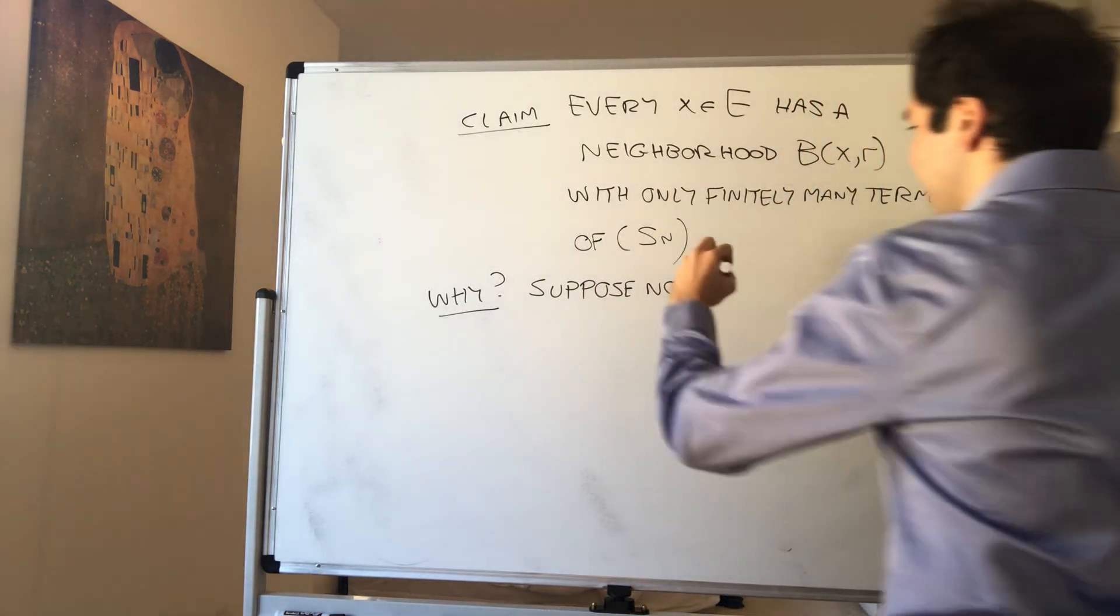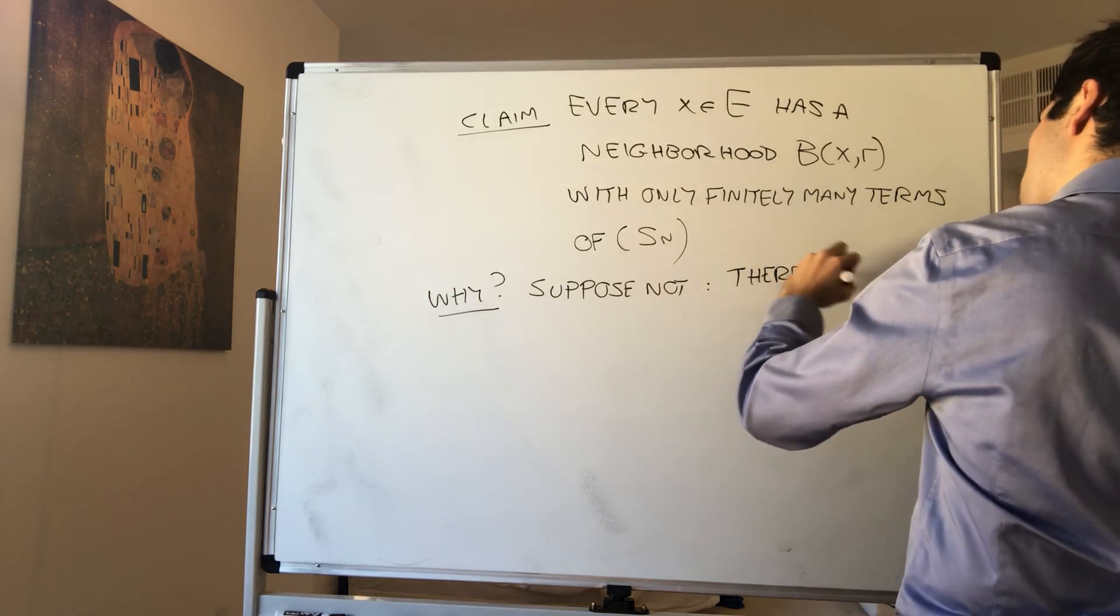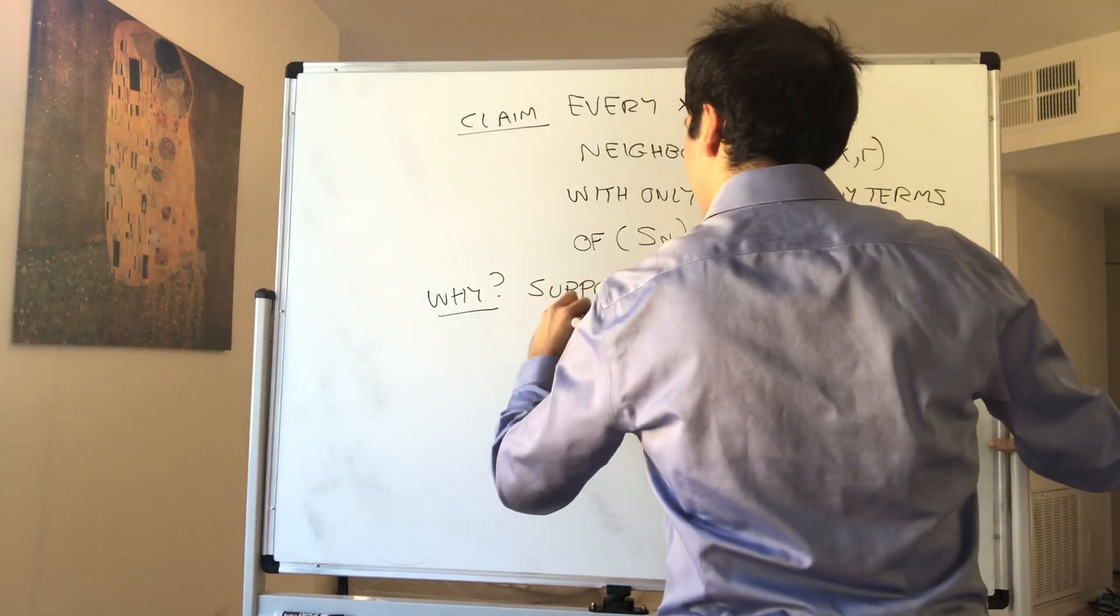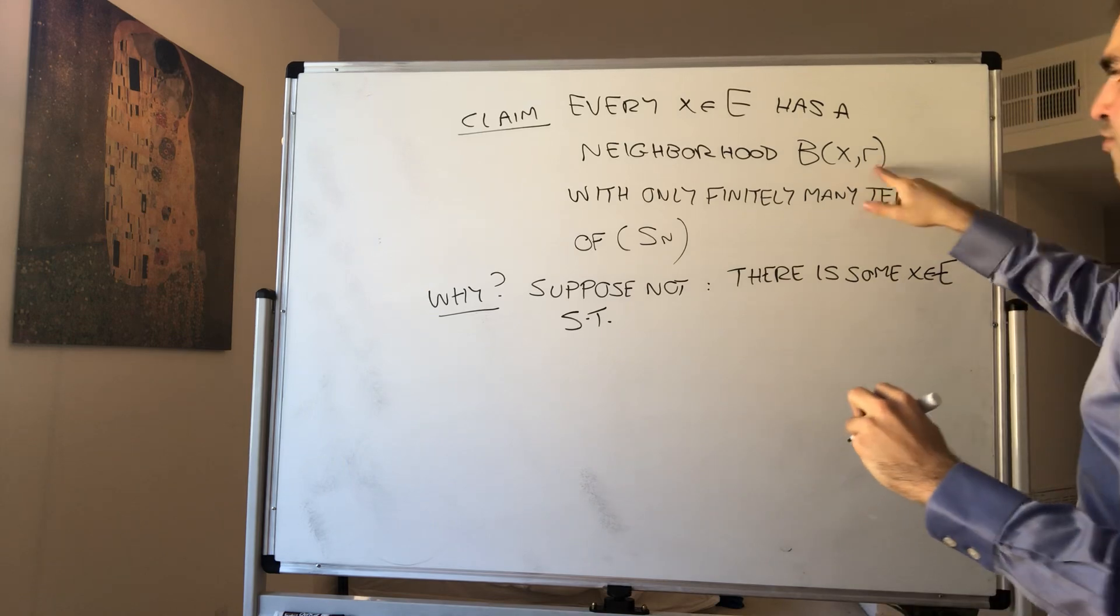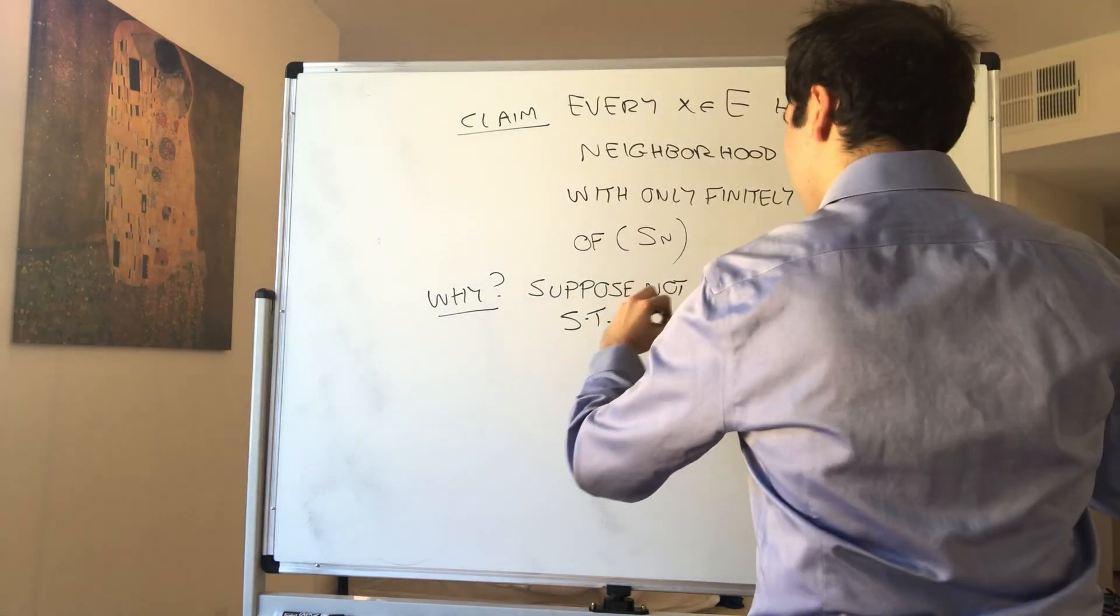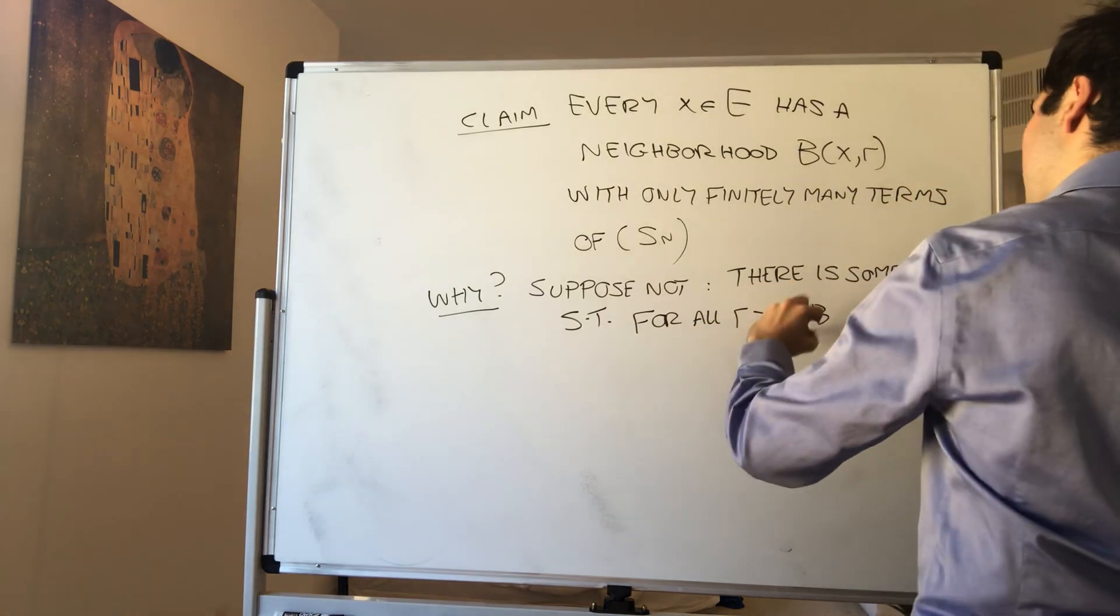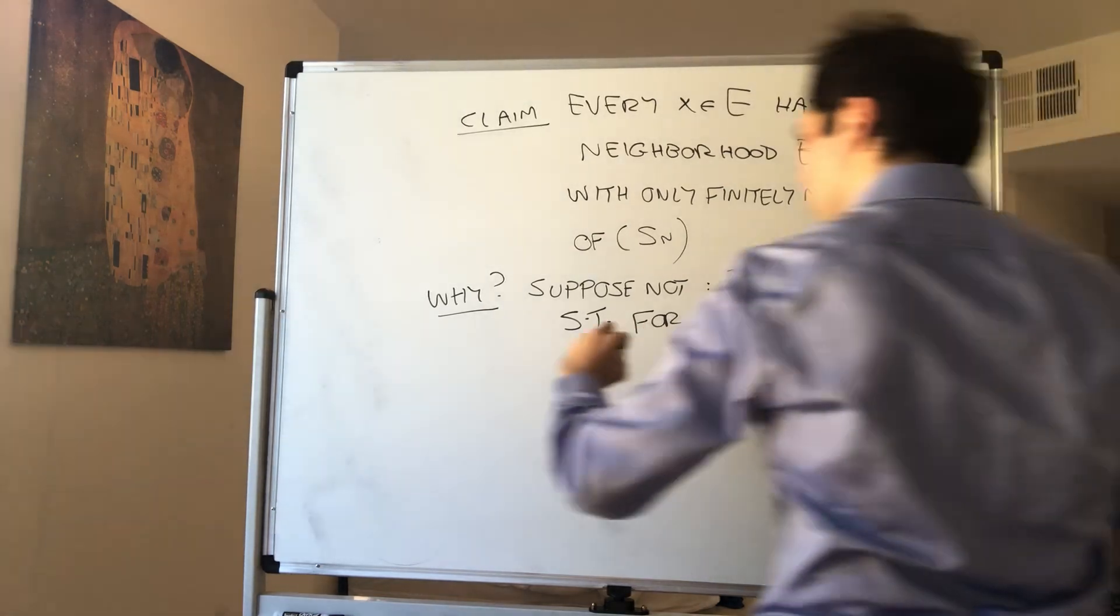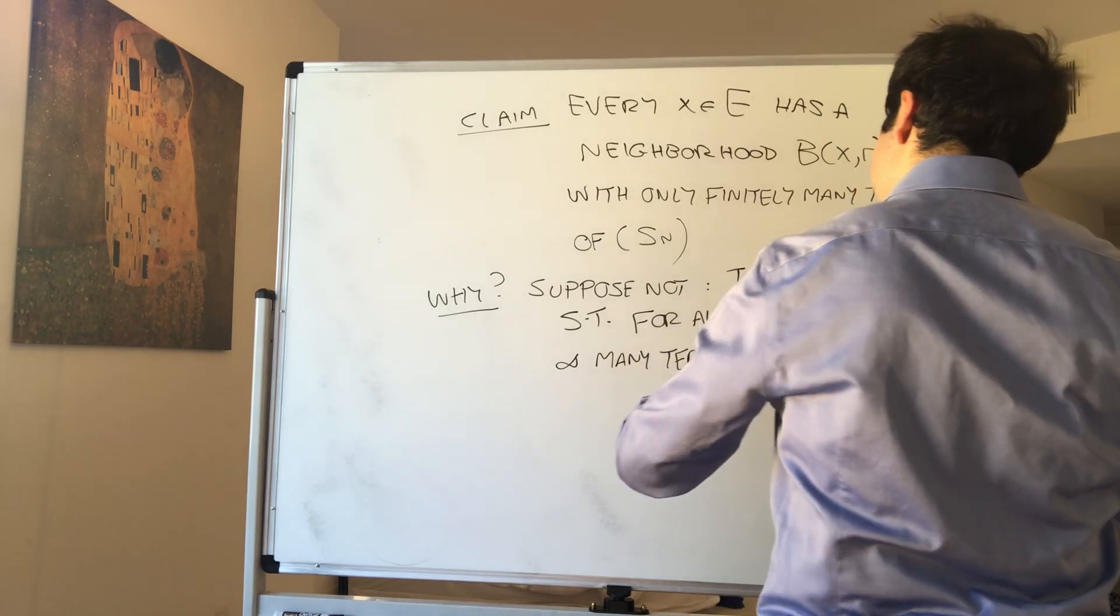What this means is there is some X in E, so basically, for all R positive, B(X,R) has infinitely many terms of Sn.